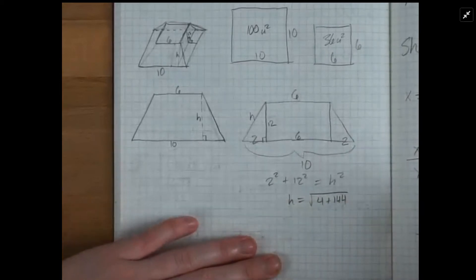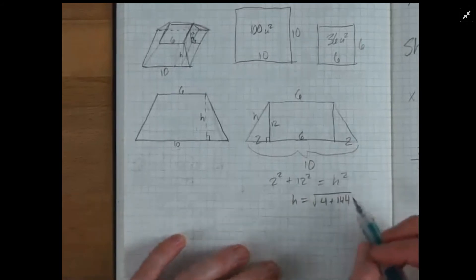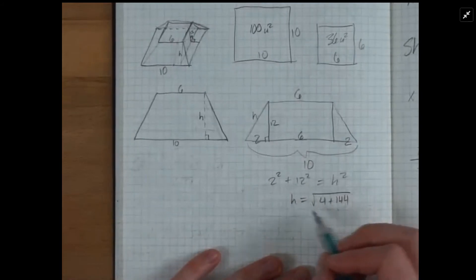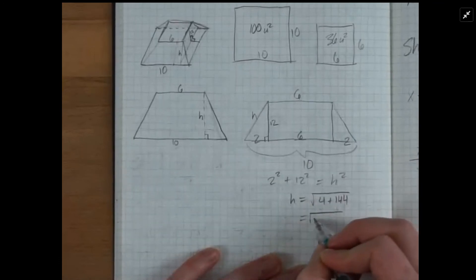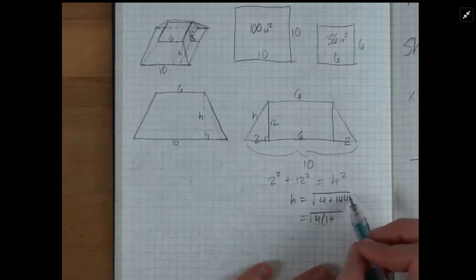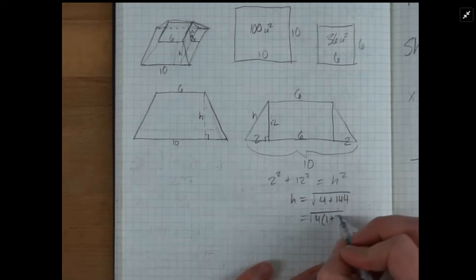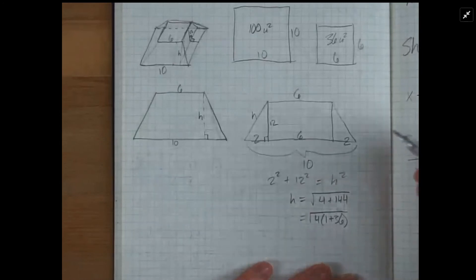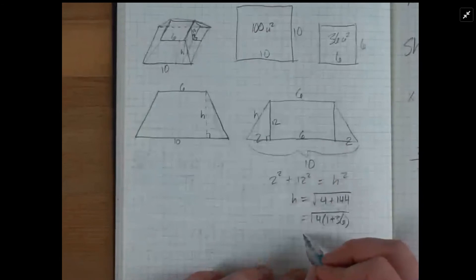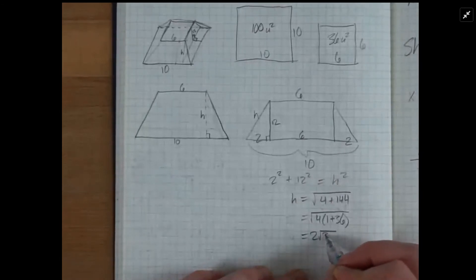And I know that I'm going to want to factor out as much as I can from here. So I'm just going to say that this is 4 times 1 plus, and 4 goes into 144 36 times. And I can know that because since it's 12 squared, it's 3 times 4 times 3 times 4. So 3 times 4 times 3 is 36. And so we end up with 2 square root of 37.